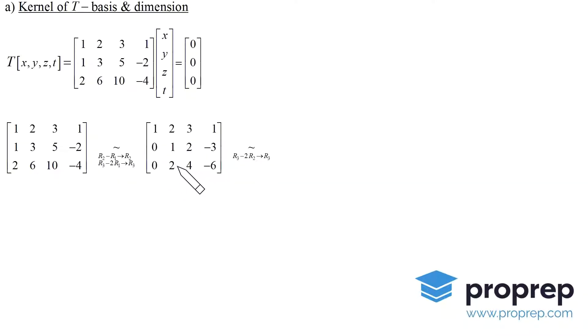Next we want a zero here, so we subtract twice the second row from the third row. After we do that, we have a row of zeros, so we cross that out.